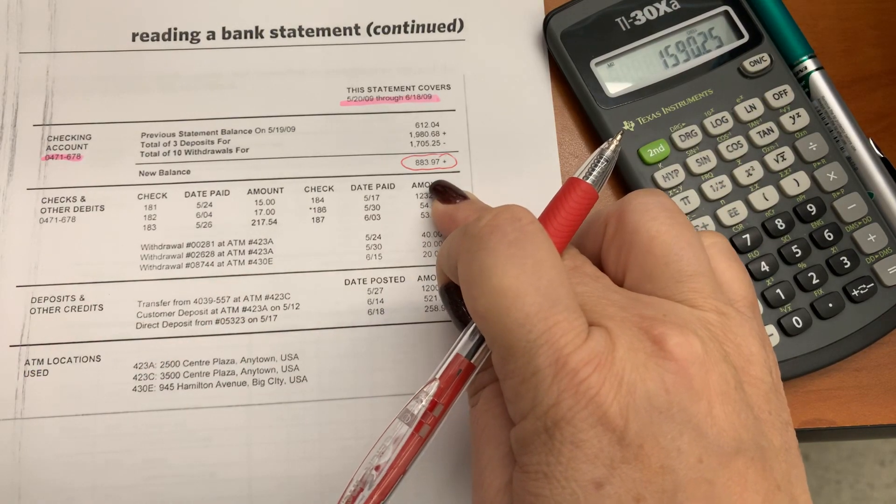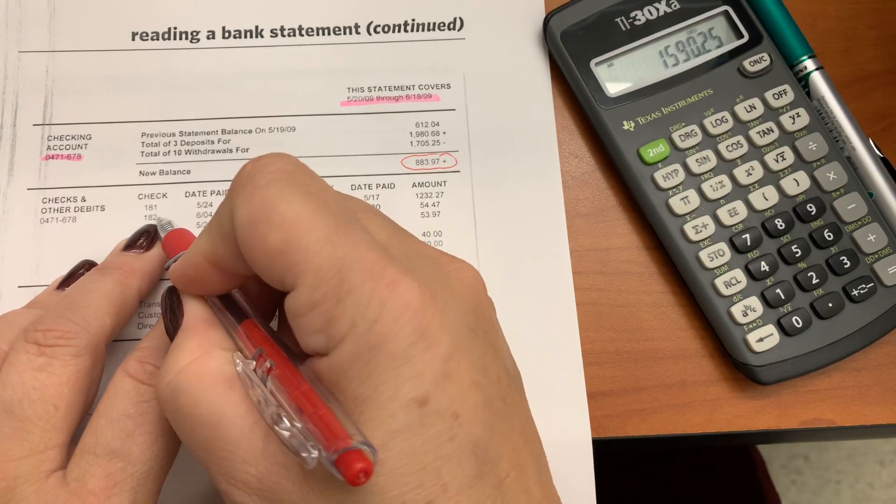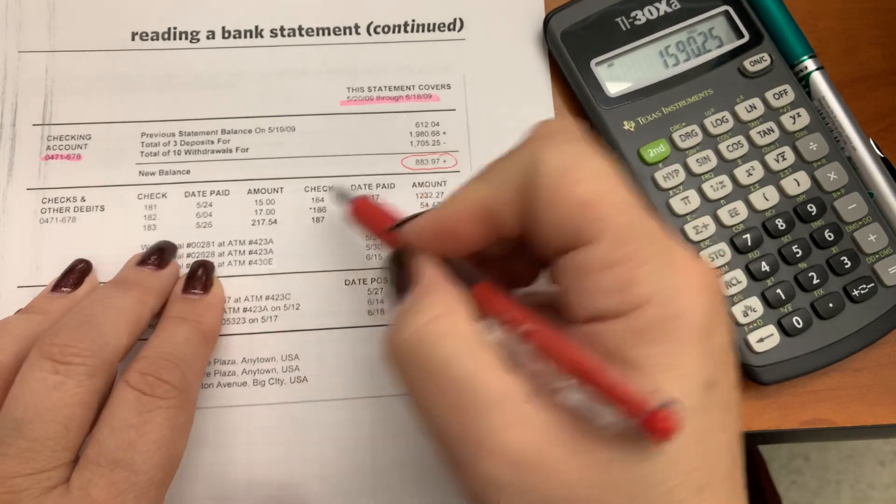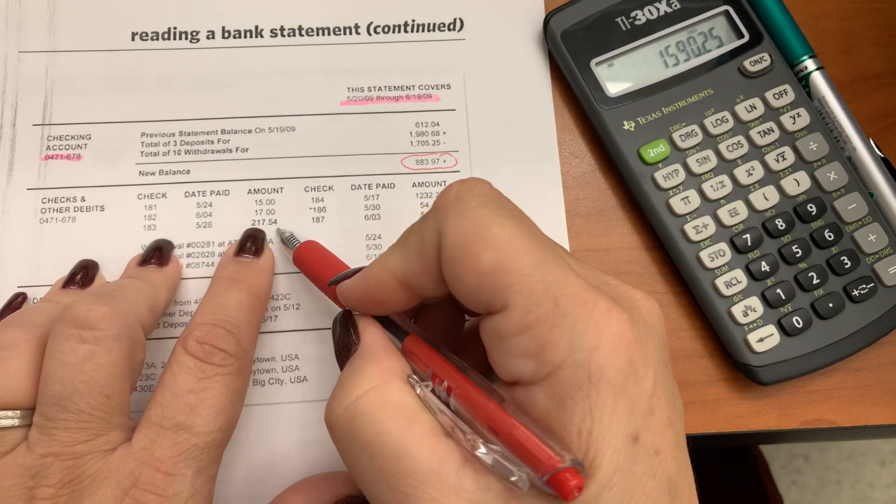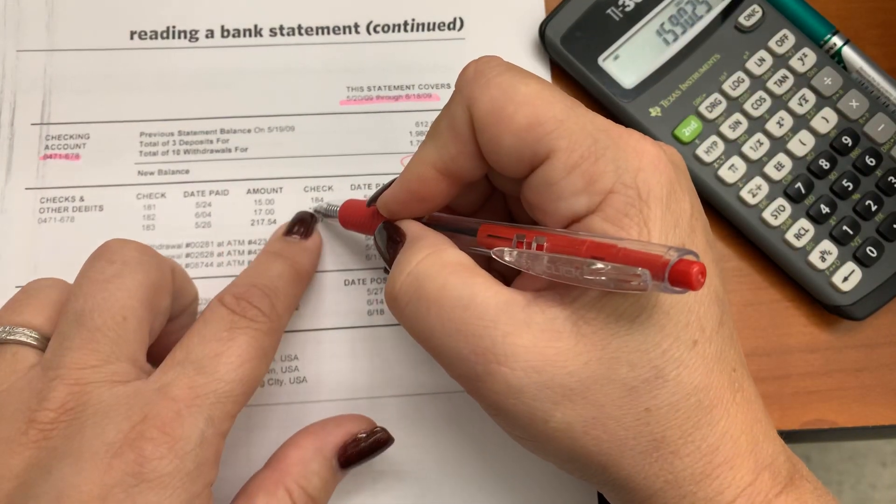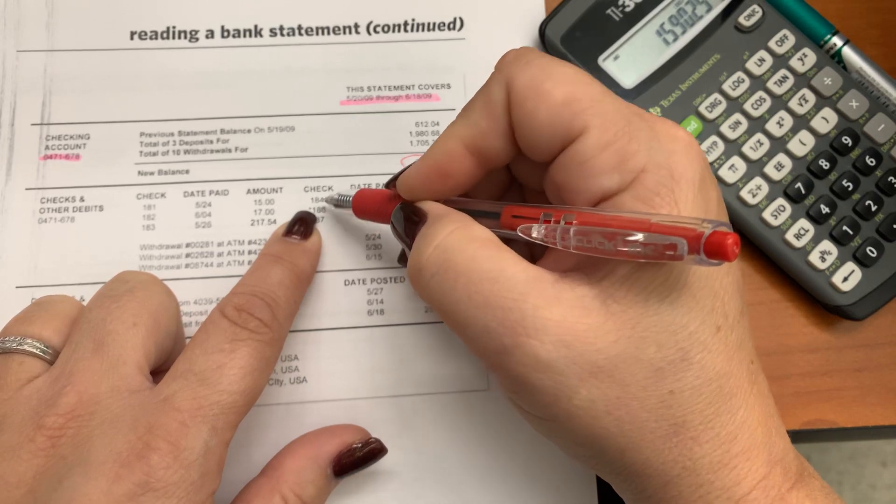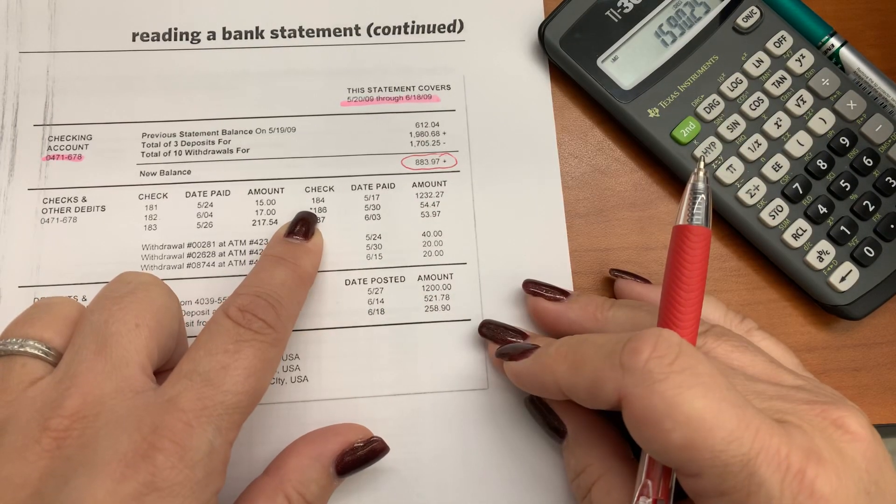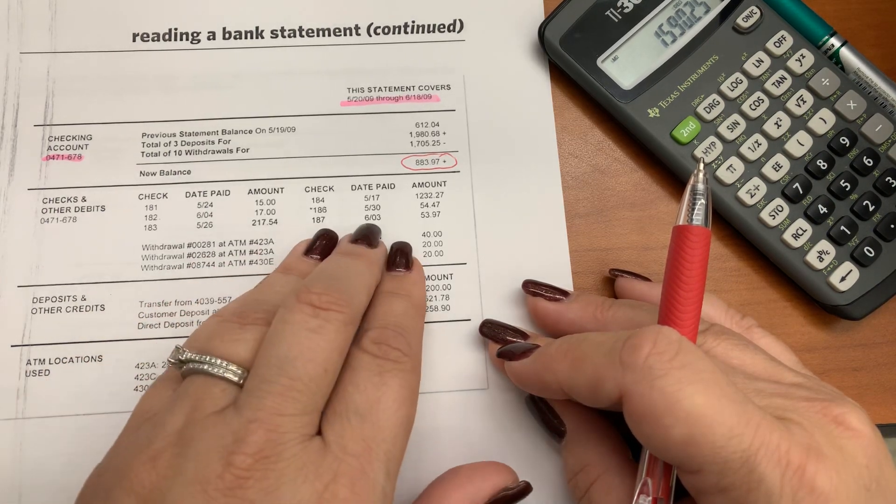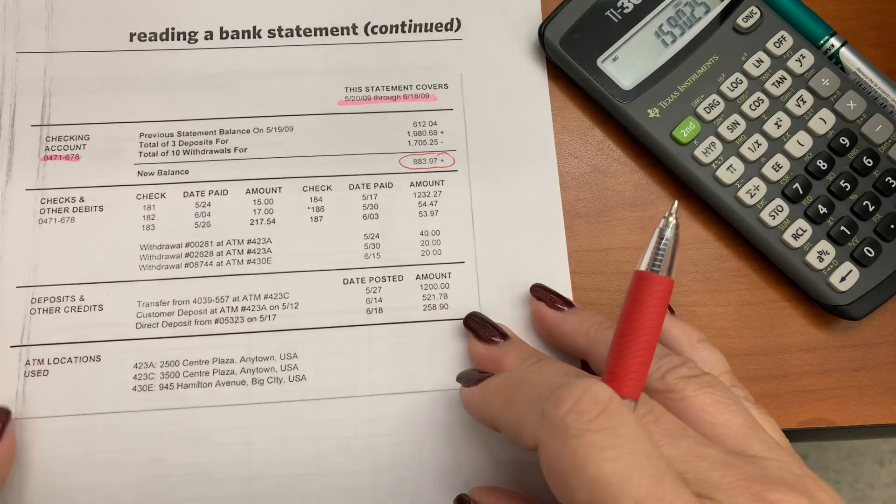Then when I look down here to check which checks cleared, check 182 did clear. It's listed in my statement. It was $17. Check 183 cleared. It was $217.54. But notice when I get here, there's an asterisk. That's because there's a gap between 184 and 186, which means check number 185 did not clear. And the amount for check 187 was $53.97. So that's how you read the bank statement itself.